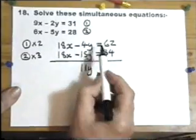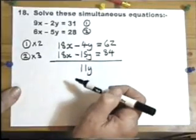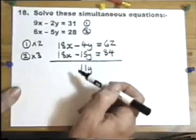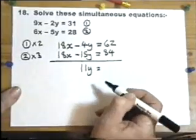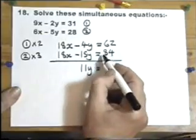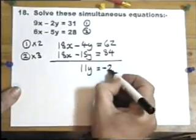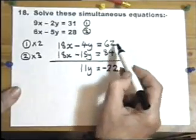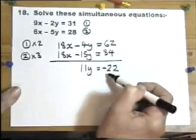Are you happy with that? Minus 4y minus minus 15y is actually minus 4y plus 15y, which will give you plus 11y. 62 minus 84. Now it is a calculator paper, so if you did 62 minus 84, the calculator would get you minus 22. But using a calculator to do that part, not too sure about that.